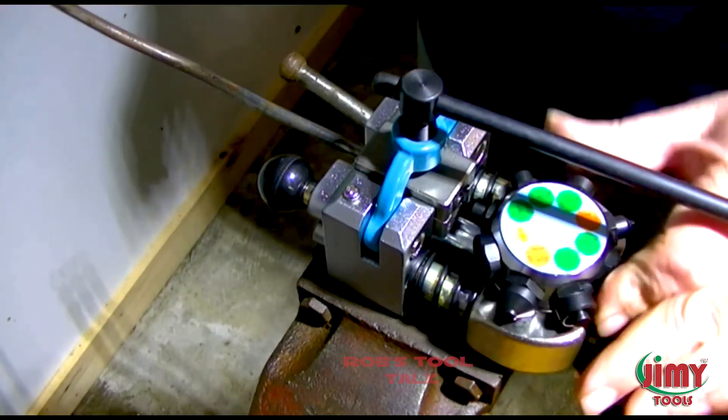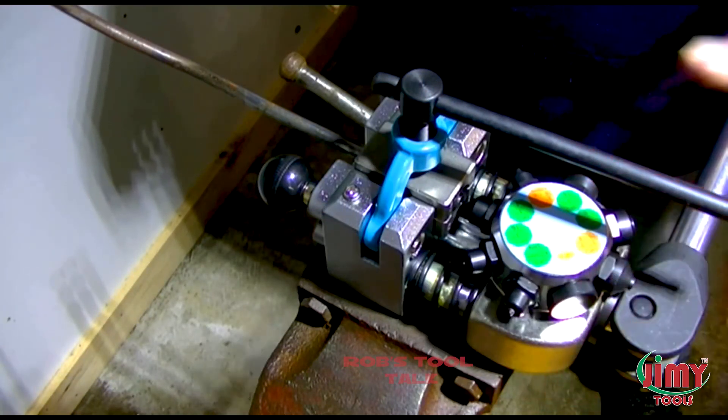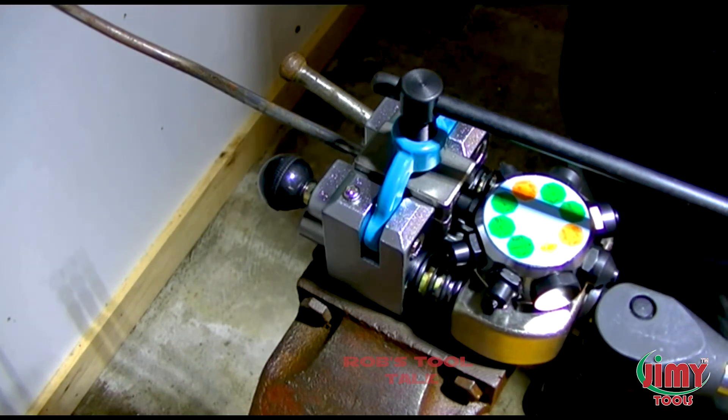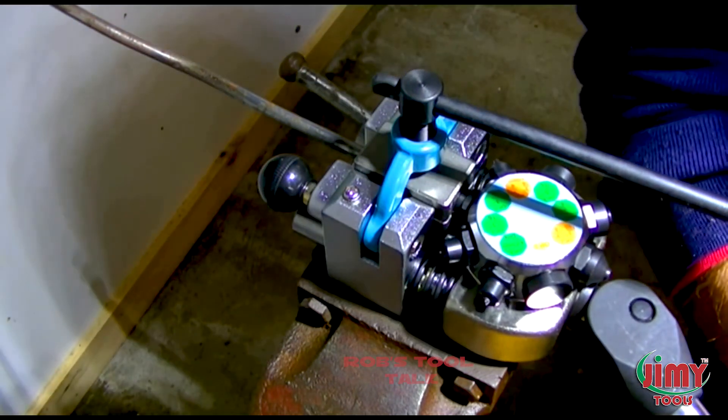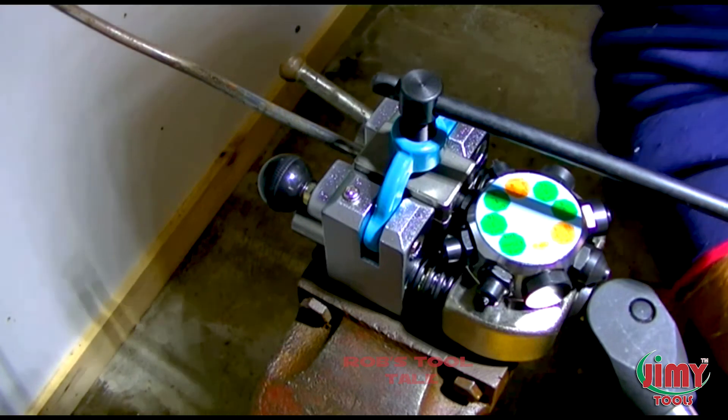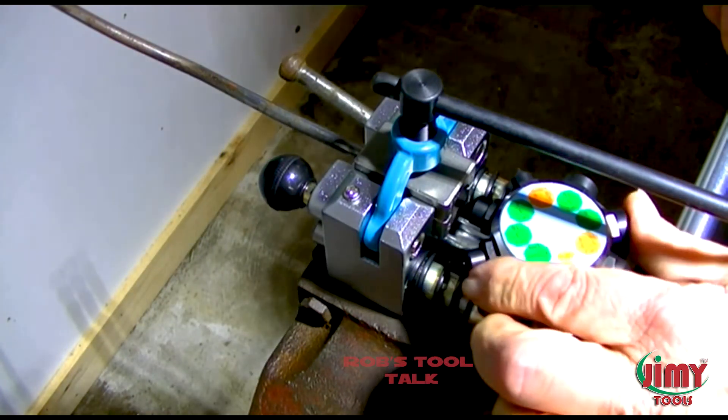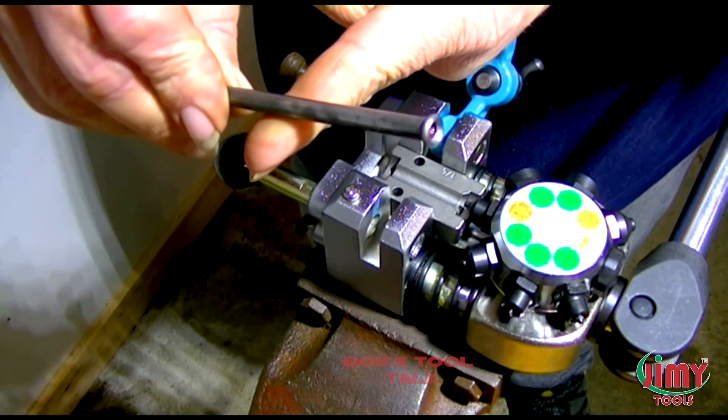Rotate the forming punch to the desired size. For the first part of the double flare, apply pressure to the handle until it stops. Then rotate the forming punch to the finishing punch for a double flare. Make sure the flare has no defects or cracks.